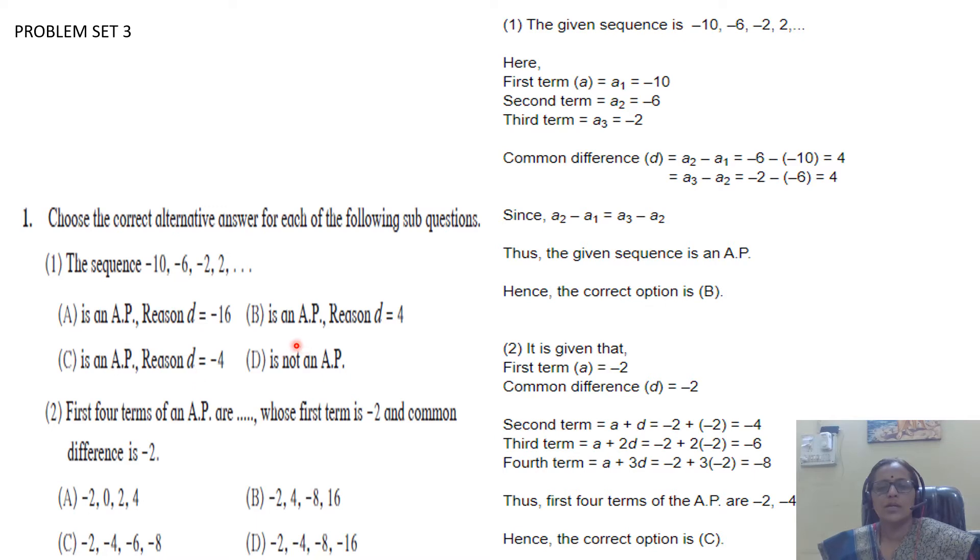Let us study. We know first term is -10, second term is -6, third term is -2. You can label it as t1, t2, t3, or a1, a2, a3. Common difference is second term minus first term, so it is 4. Third term minus second term is also 4. So this difference is constant. The correct alternative is B, where the difference is 4.